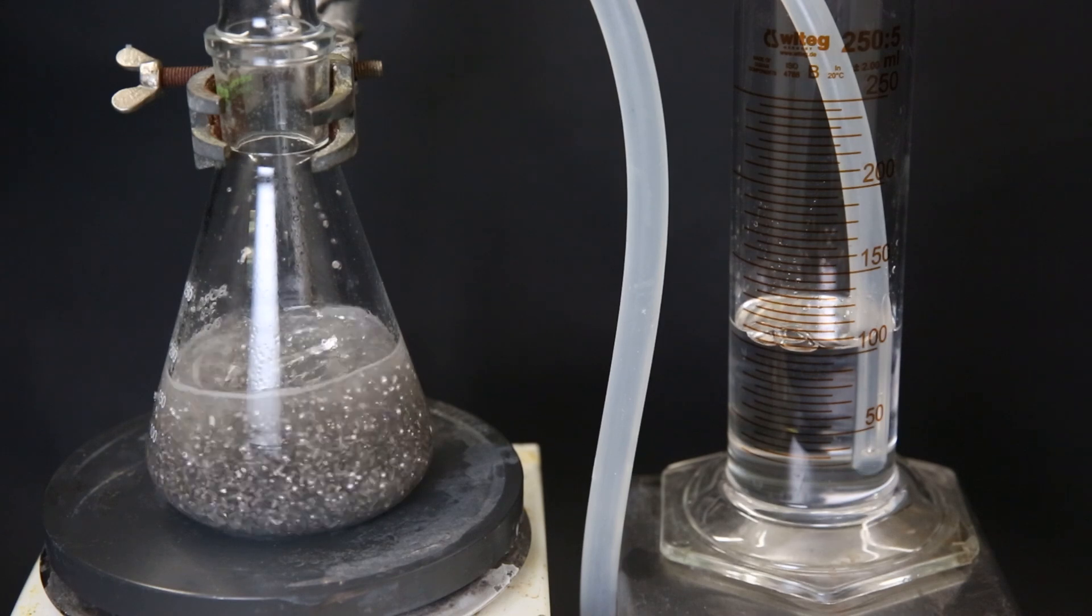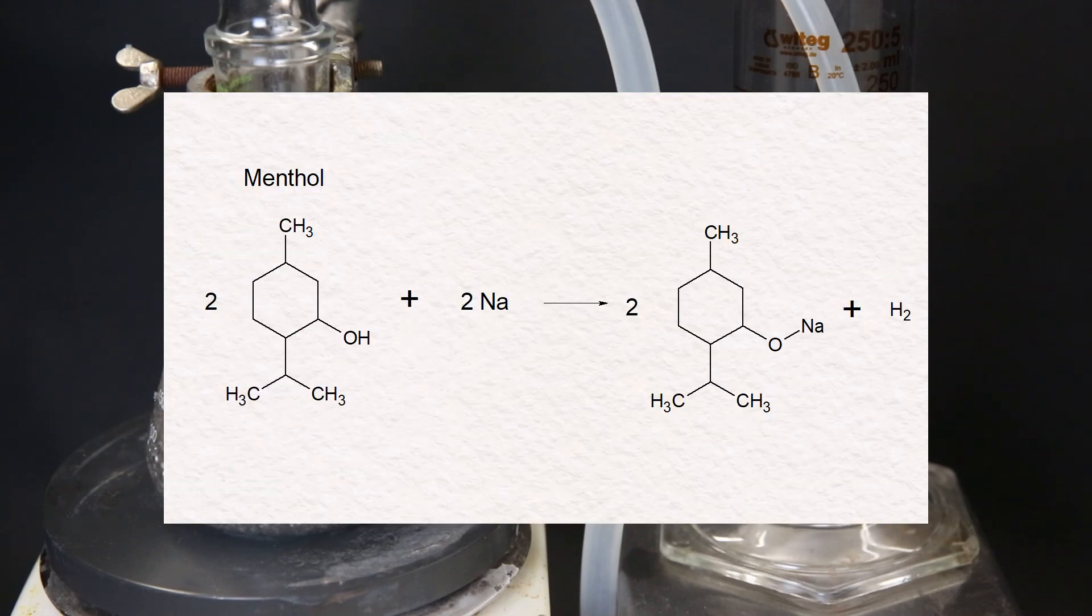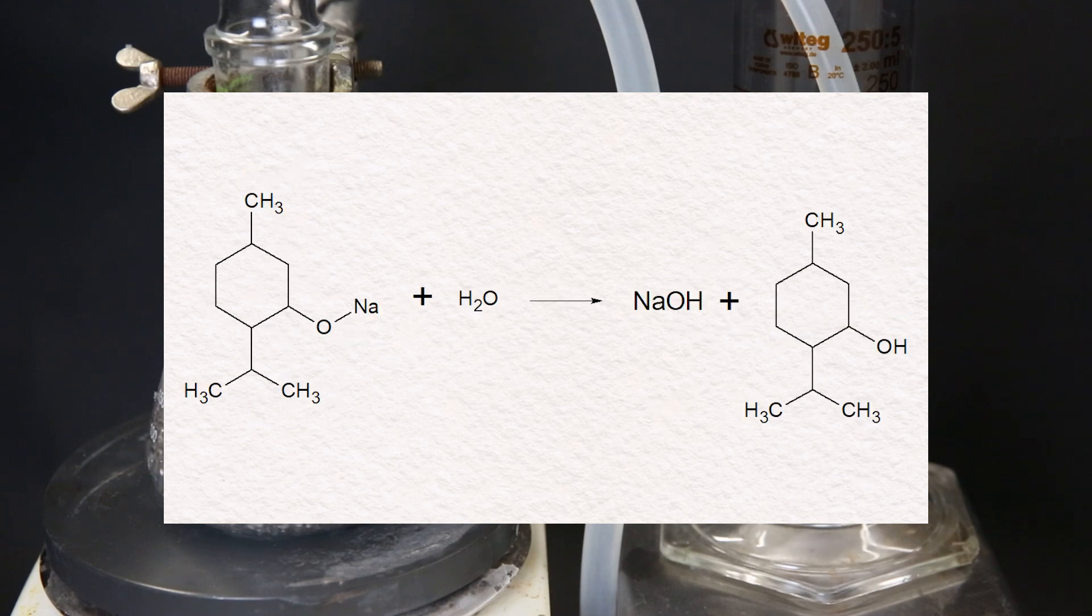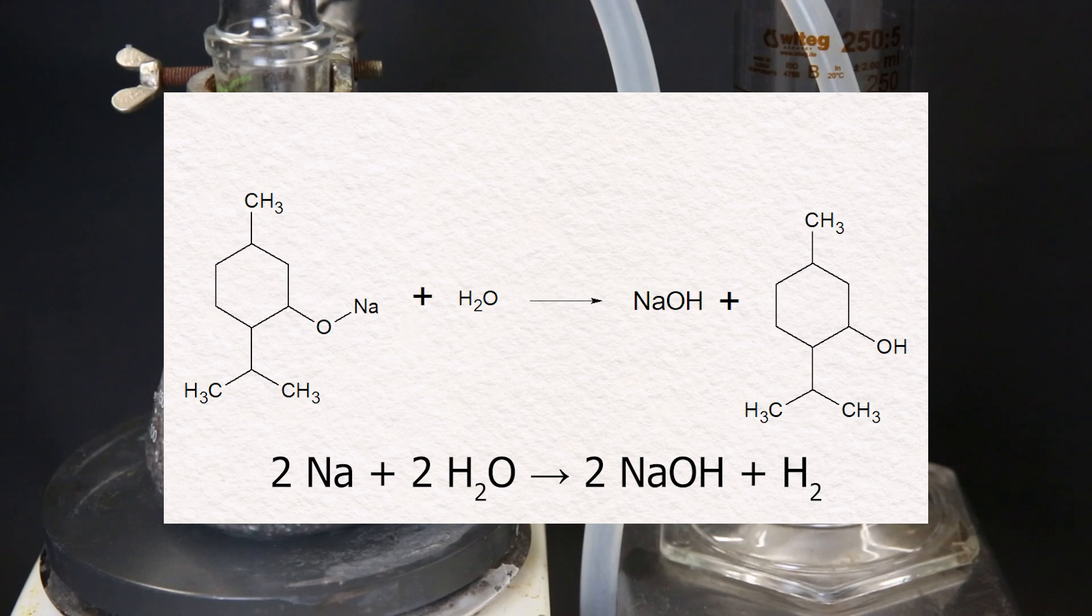The way it works is that the sodium metal reacts with the menthol to form a sodium alkoxide and hydrogen gas. This sodium alkoxide can then react with water and form sodium hydroxide and menthol. Also some of the sodium metal will directly react with water to form sodium hydroxide and hydrogen gas, but this is pretty minor.